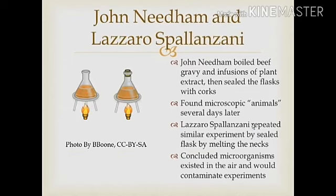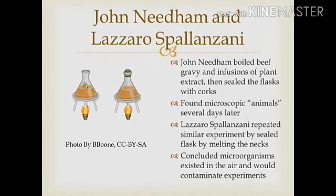But even by the 1700s, the spontaneous generation debate was still in progress. By this time, scientists agreed larger animals such as flies could not arise from spontaneous generation. However, the debate focused on the origin of the animalcules as described by Leeuwenhoek — those very small organisms were thought to arise from spontaneous generation. An Englishman named John Needham tried to advance the theory by boiling beef gravy and plant infusions in flasks to remove all life forms, then leaving some jars open and sealing others with corks. After several days, he found that both flasks contained cloudiness and microscopic animals.